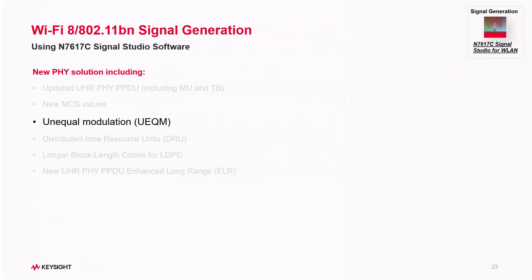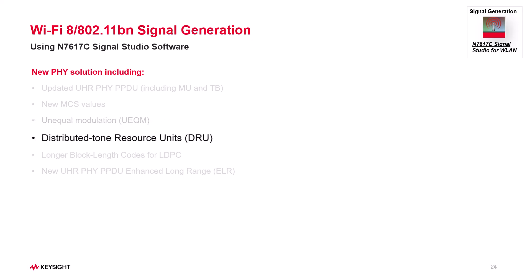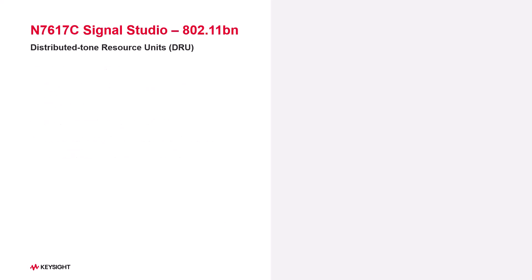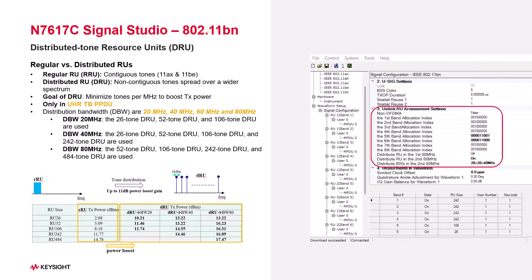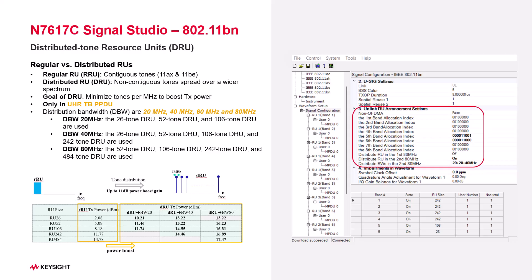One of the biggest features is Distributed Tone Resource Units, or DRU. It is used in TB PPDU frames only. DRU boosts transmit power by spreading tones across a wider spectrum. In Signal Studio, just set the RU allocation index and toggle the distributed bandwidth option.